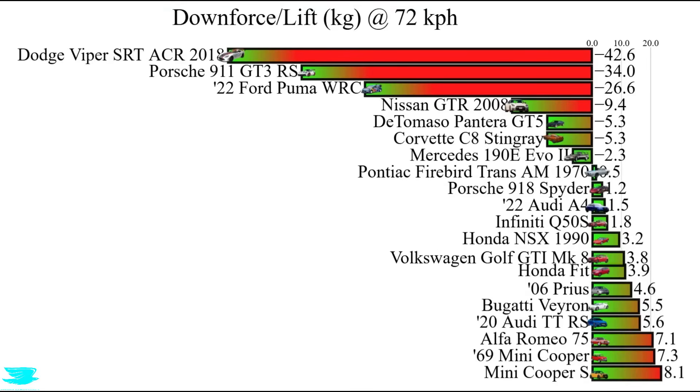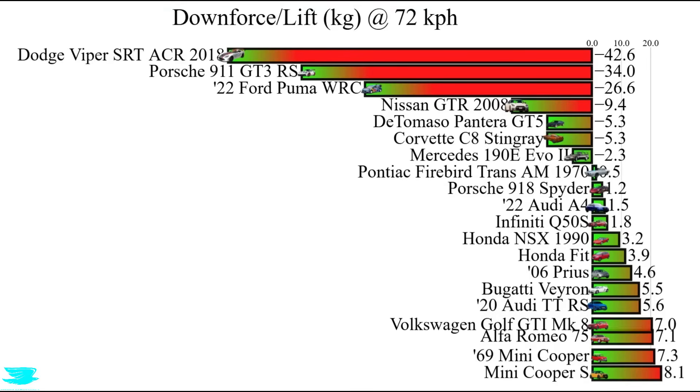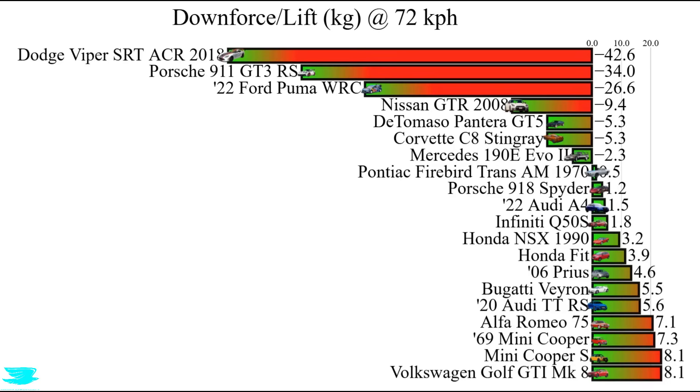For the lift at 70 kph, it produces 8.1 kilos of lift, which is pretty bad, although that's to be expected from hatchbacks because of their general shape.